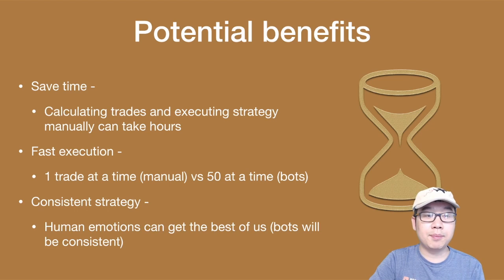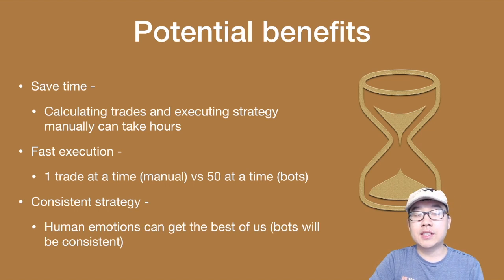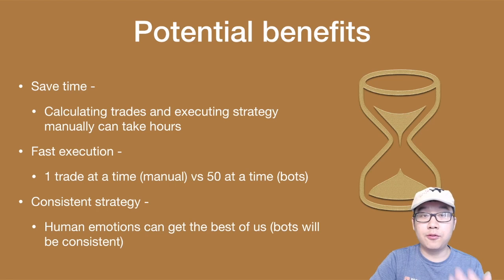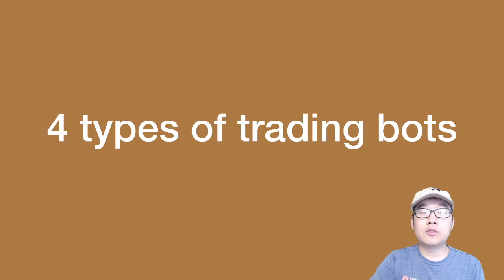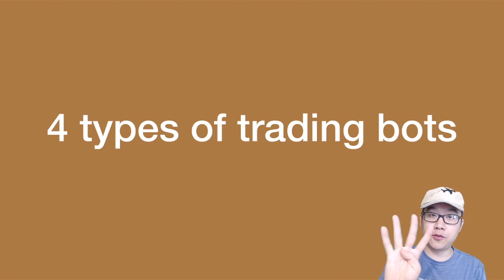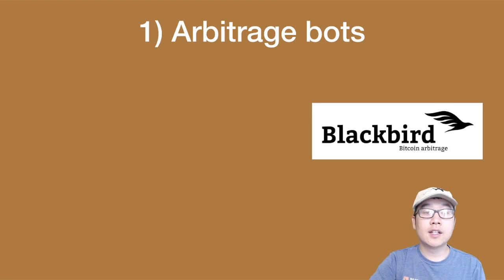Also, consistency — because when we trade by ourselves, human emotions can get the best of us and we can succumb to FOMO or panic, for example, and bots don't have those emotions. They will be consistent. So now we come to the section where I'll share with you the four types of trading bots out there.